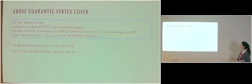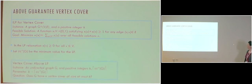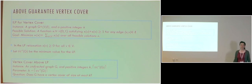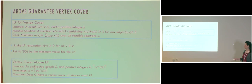In the linear programming relaxation, rather than taking x_v to be in {0, 1}, we allow x_v to be any positive value. Let vc*(G) be the minimum value for the LP. We define vertex cover above LP: the instance is the graph G with positive integer K and the optimal LP solution, the parameter is K minus vc*(G), and we ask whether G has a vertex cover of size at most K.